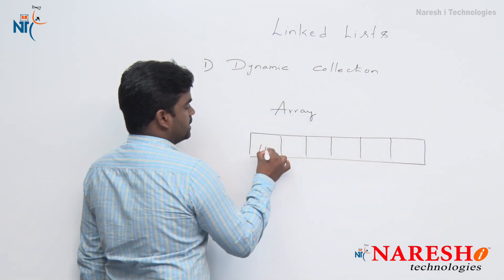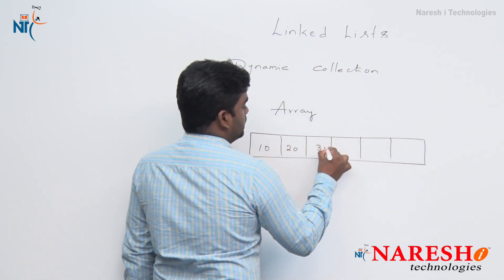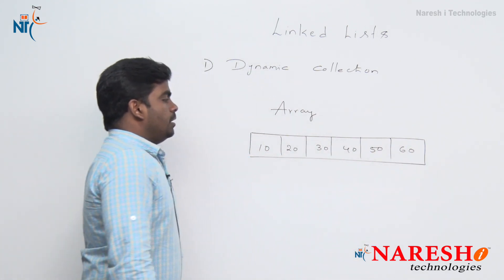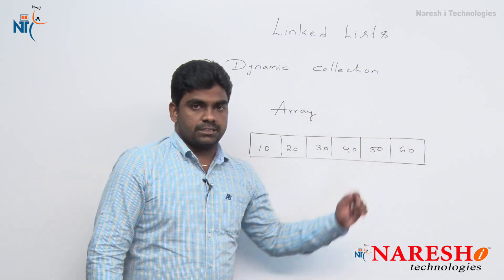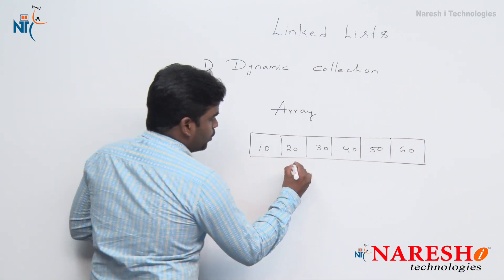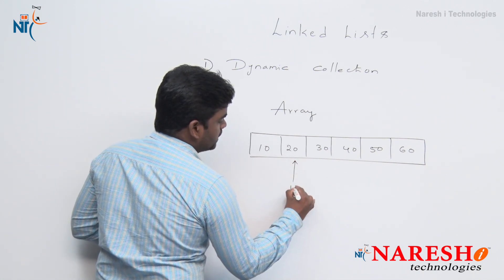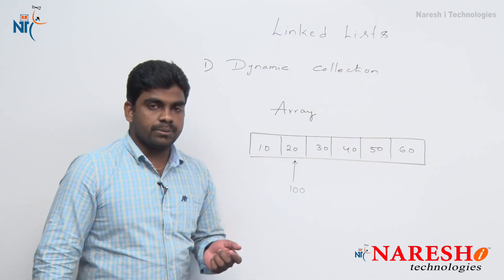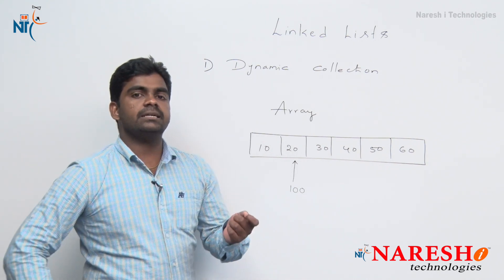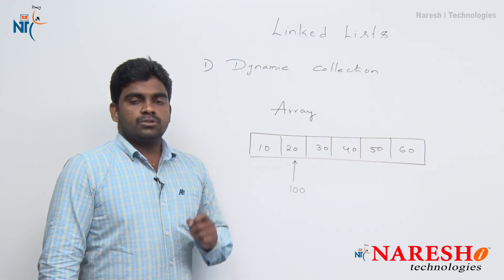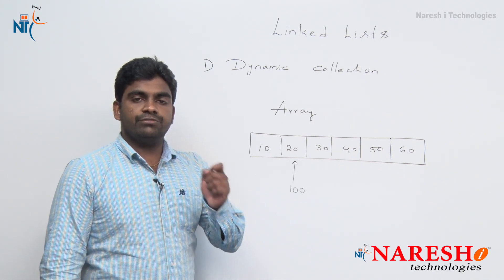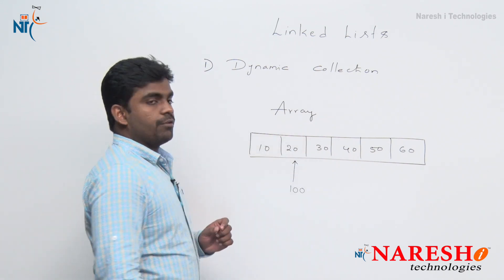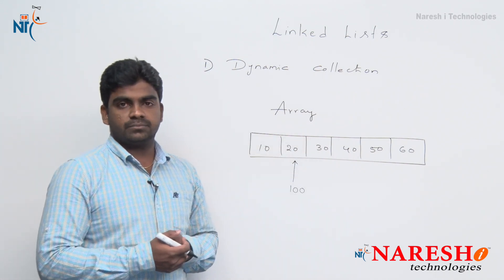For example, here some elements are there: 10, 20, 30, 40, 50, 60. Of course, it is a linear data structure. Suppose I want to insert a new element — 100 — I do not want to replace; I want to insert an element into the array. Then what will happen? First it has to shift all the elements, because directly if we insert, 20 will be replaced and we lose the value 20.